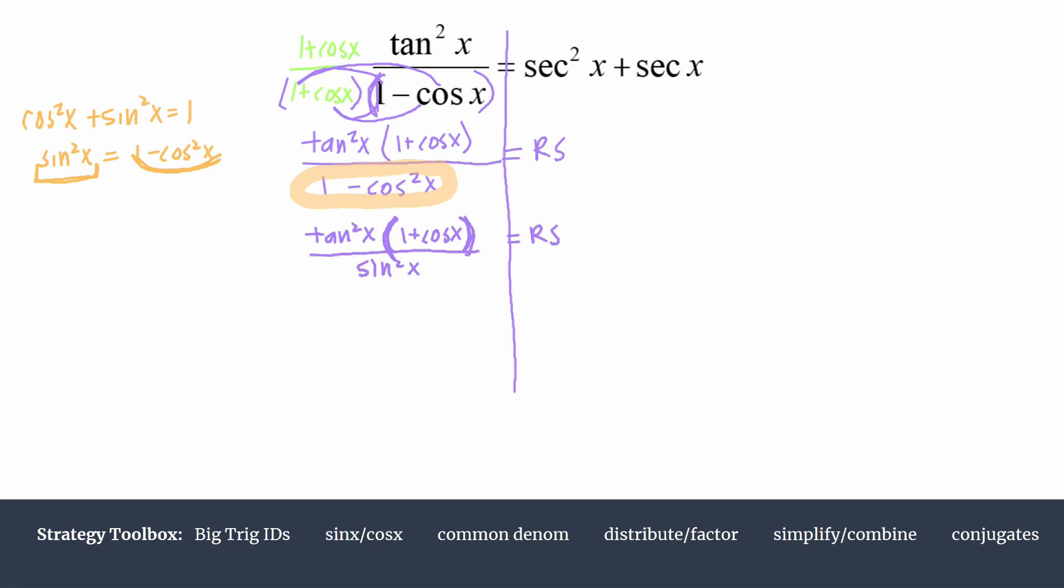I think it may help here to look specifically at simplifying this tangent squared over sine squared. We're kind of separating these two things out. It's like tan squared x times sine squared x times 1 plus cosine x over 1 technically.